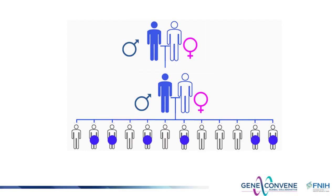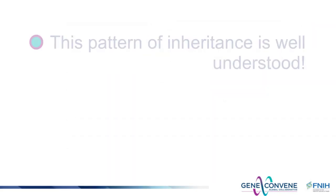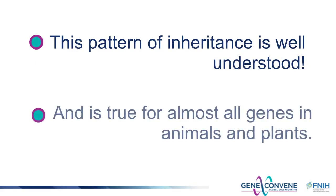Think of it this way. If the blue form of the gene was responsible for maleness, which in humans is associated with the Y chromosome, then this question could be rephrased: how many of their children are expected to be boys? Again, 50%. This pattern of inheritance is well understood and is expected for most genes and chromosomes in sexually reproducing plants and animals, and that includes insects. Do you understand why we expect 50% in this example?